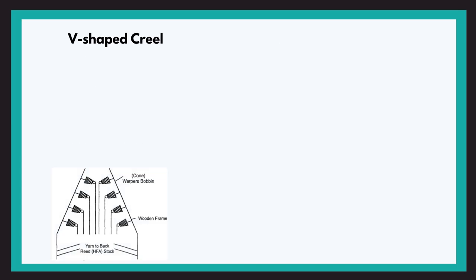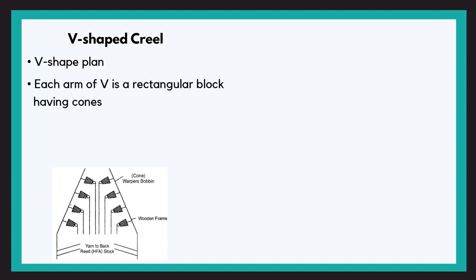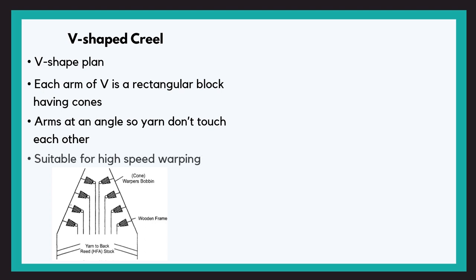In the V shape creel, the plan of the creel is V shaped. The arms of the creel are two rectangular blocks arranged in a V form. As the arms are at an angle, the yarns don't touch each other, and it is good for high speed warping.